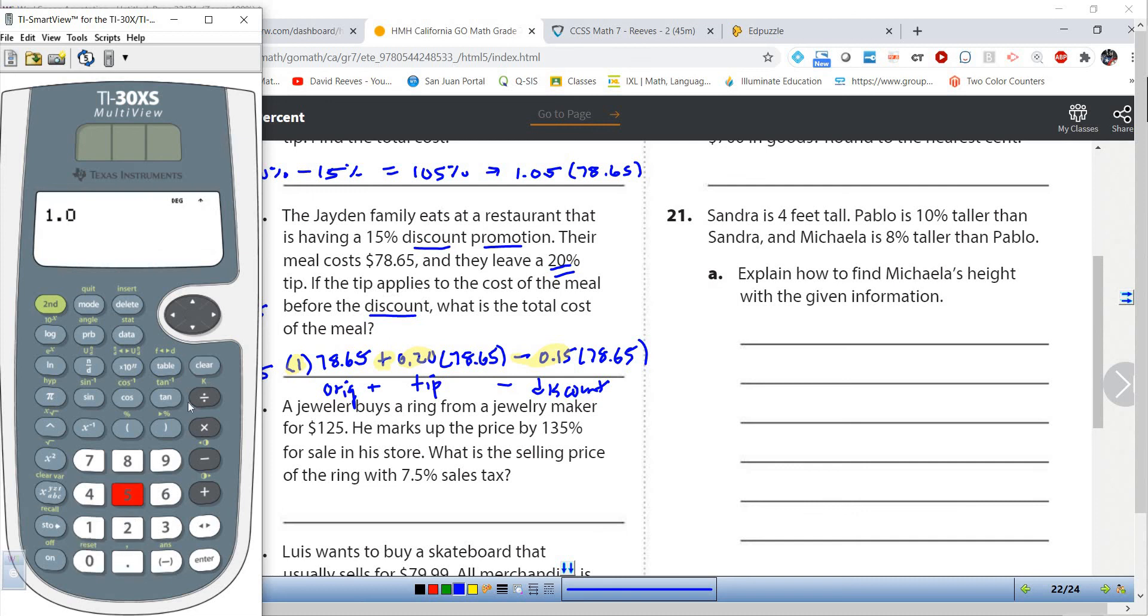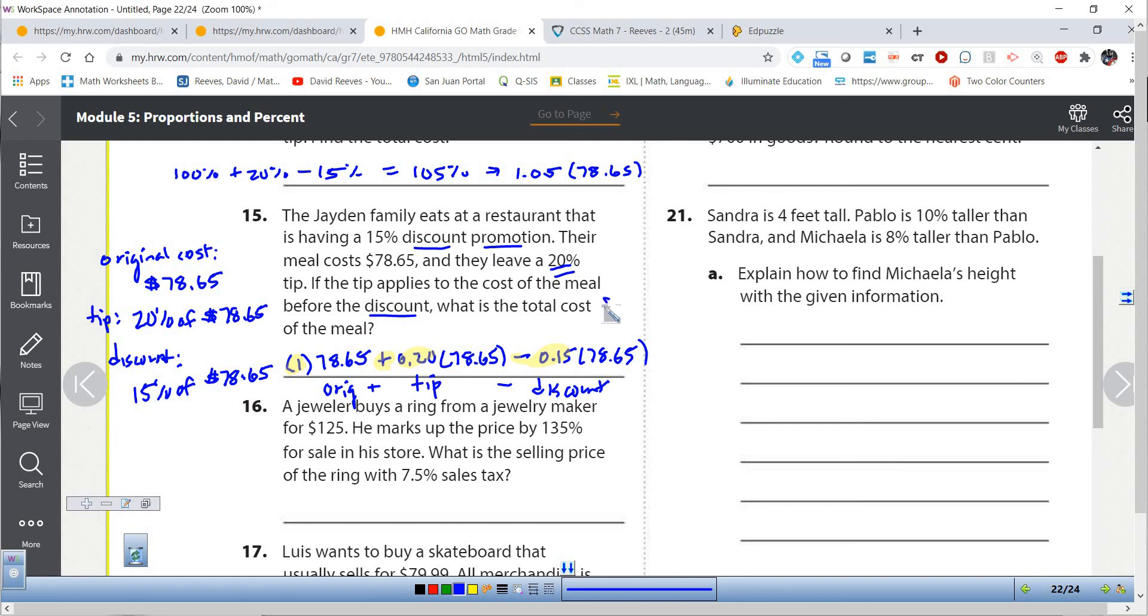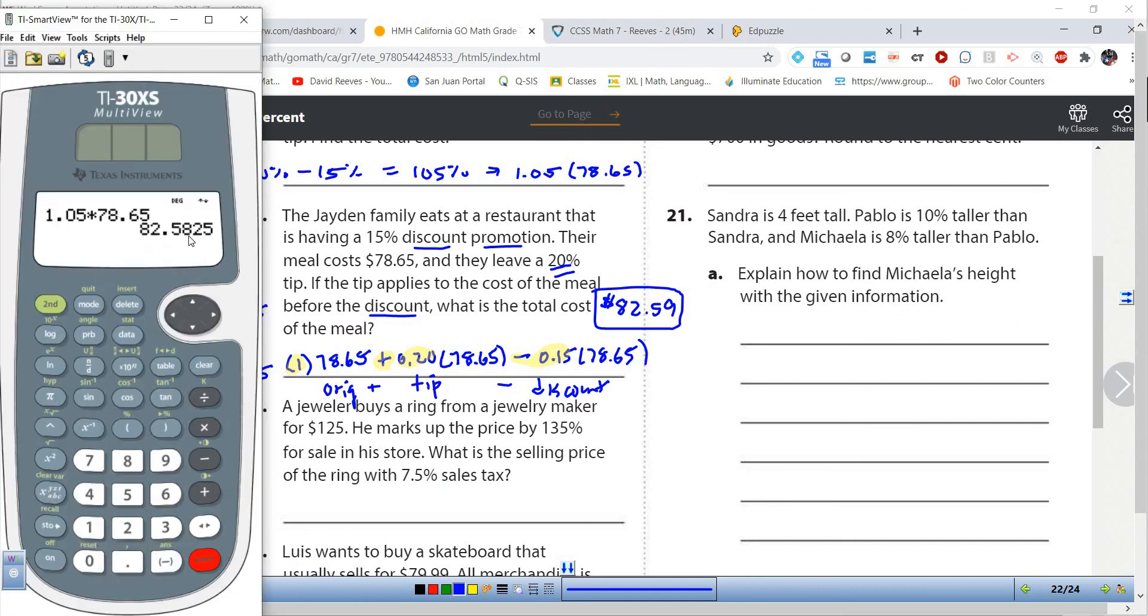Because basically, their discount took care of three-fourths of their tip. 15% of their tip is covered by the discount, but they're still doing 5% more. So if I go to my handy-dandy calculator, 1.05, 105% of $78.65 gives me $82.58, or if I round up $82.59. So in the end, they're going to pay $82 and I'm going to round up to 59 cents. If we look at the calculator, you could argue for 58 cents. But again, in real life with money, we usually round up anything that goes beyond two decimal places.